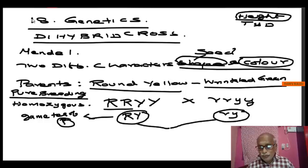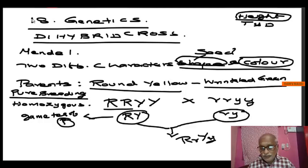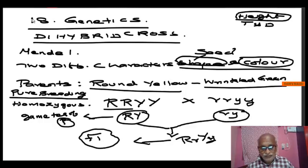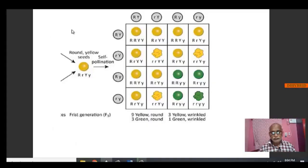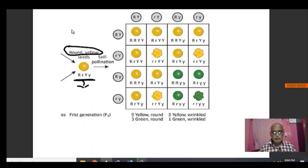These two gametes combine to form an individual — that is capital R, small r, capital Y, small y. This we call the F1 generation, the first filial generation. This F1 generation is called a hybrid, and it is always heterozygous. We know that the F1 generation shows round yellow, and it is heterozygous. The first filial generation is showing dominant character, but genotypically it is also carrying recessive characters.